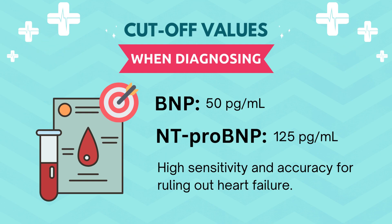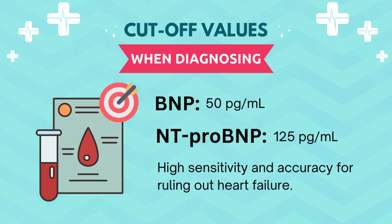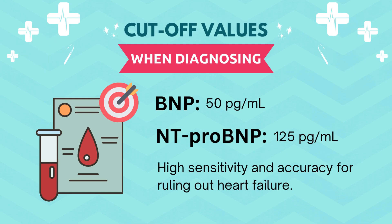As of 2017, Canadian guidelines recommend a threshold of 50 picograms per milliliter for BNP and 125 picograms per milliliter for NT-proBNP, where values lower than these cutoffs mean that the patient likely does not have heart failure, and values higher than these cutoffs could be indicative of heart failure.